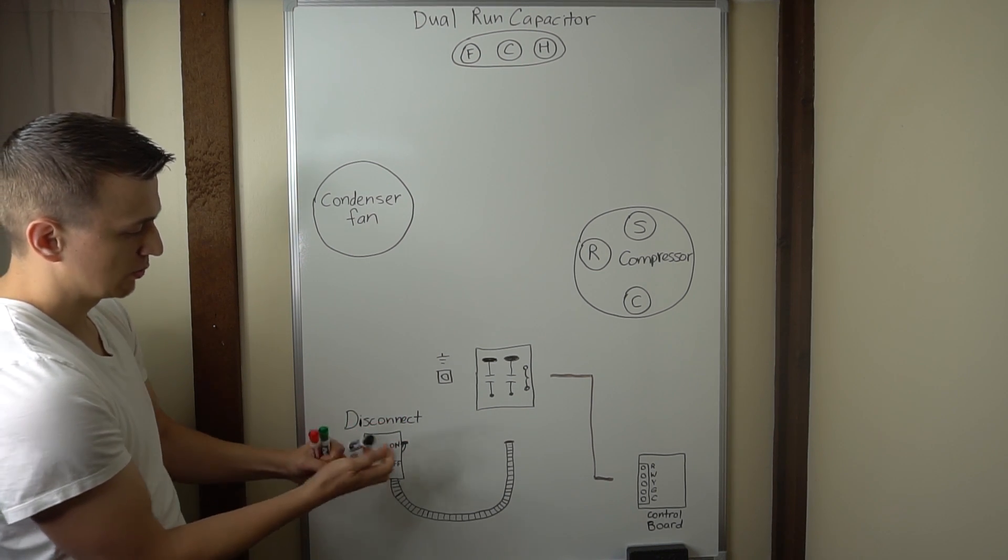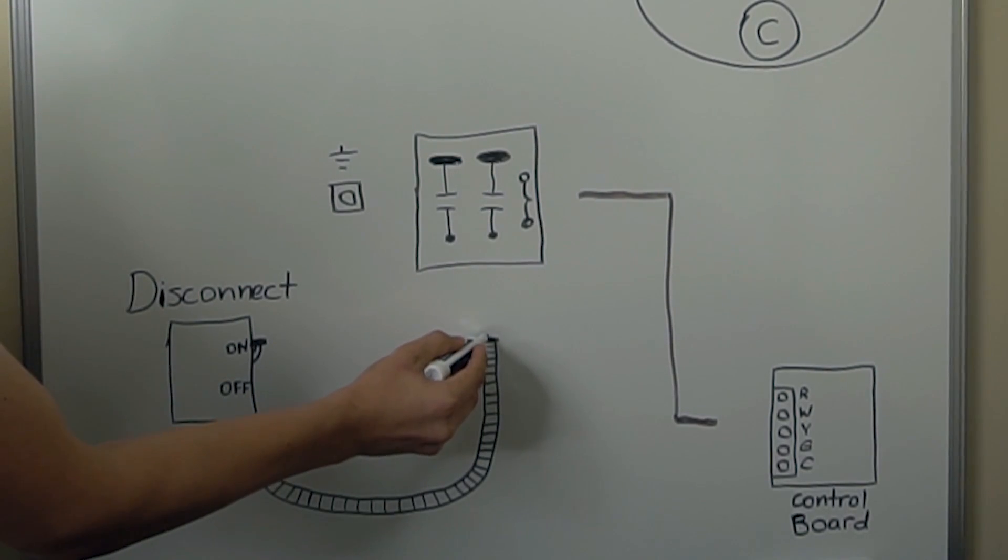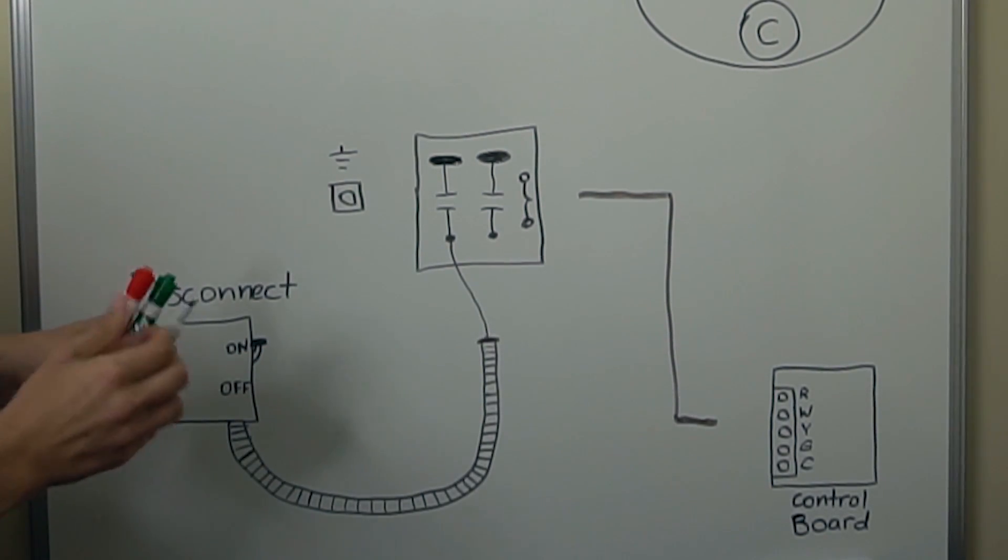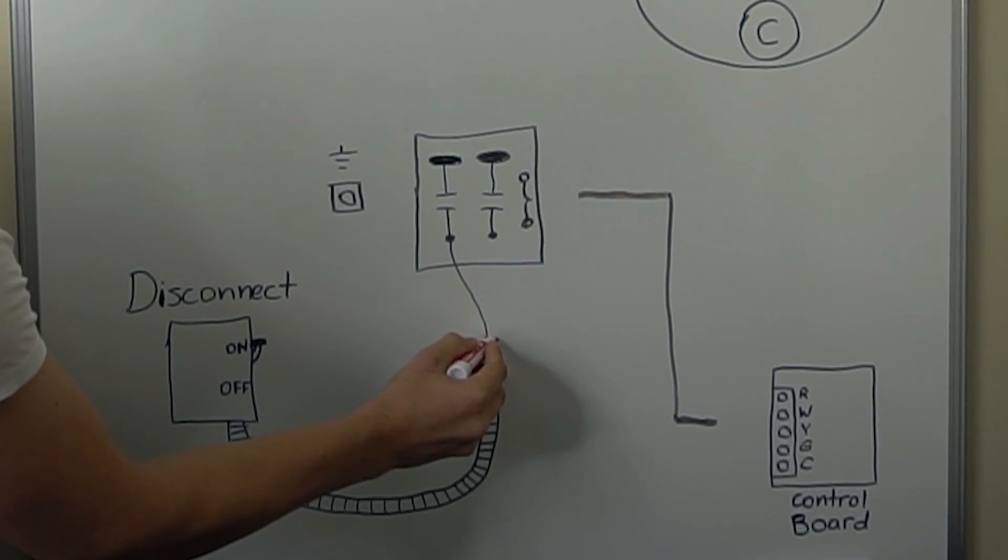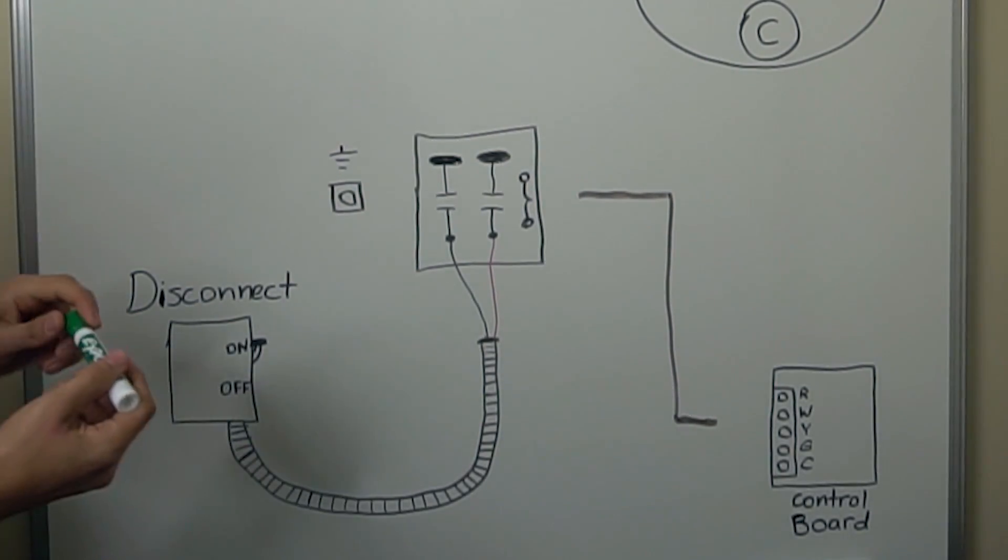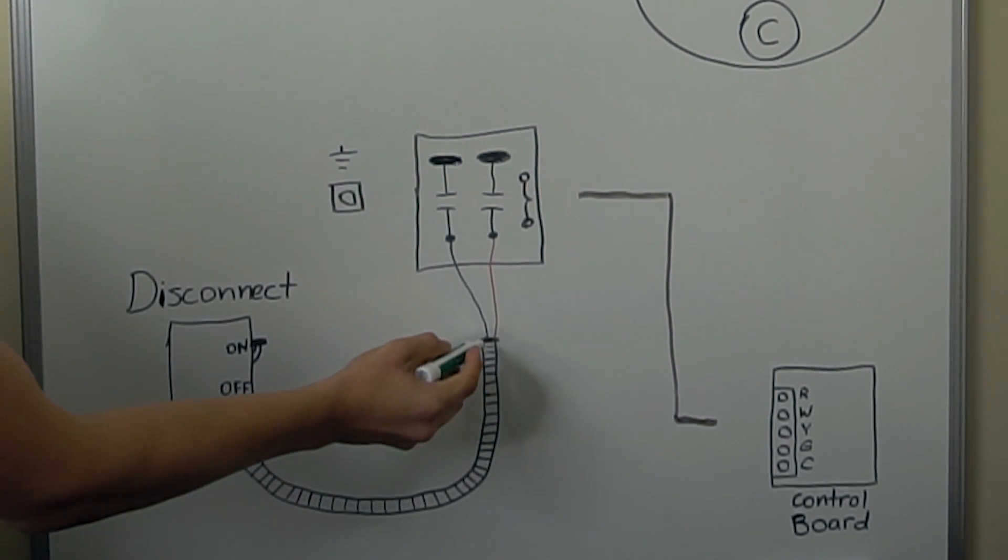From the electrical whip, the black wire will go to one side of the contactor. Then we got a red wire that will go to the other side of the contactor. And then we have a ground, it's going to be a green, that will just be mounted to the chassis.